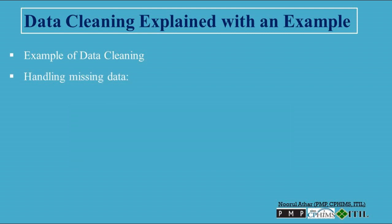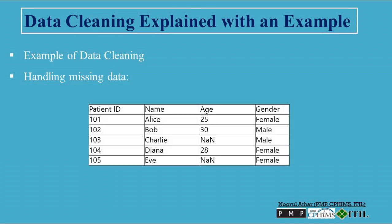Handling missing data. If some patients do not have an age listed, one could either remove these records, replace the missing values with the average age, or use a statistical method to impute these missing values based on other data in the dataset. Here's a table illustrating the dataset with missing age data. In this example, the patients with IDs 103 and 105 have missing age values, represented as NAN. To handle this missing data, one could remove these records, replace the missing values with the average age of the dataset, or use a more sophisticated statistical method to estimate the missing values based on other available data in the dataset.